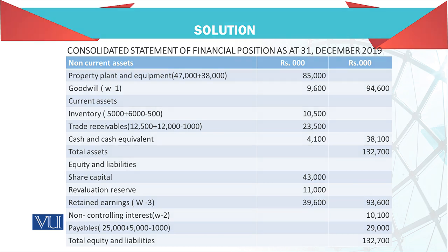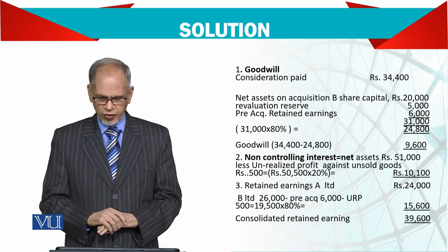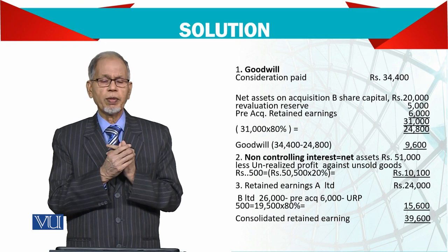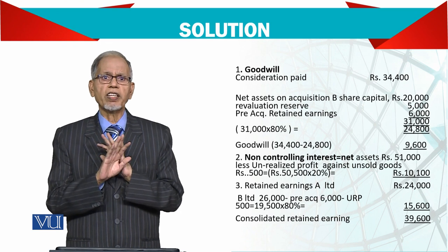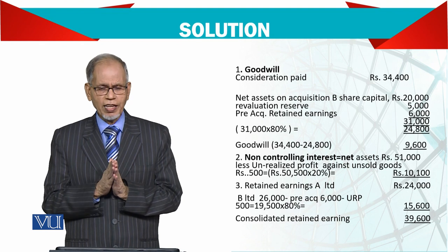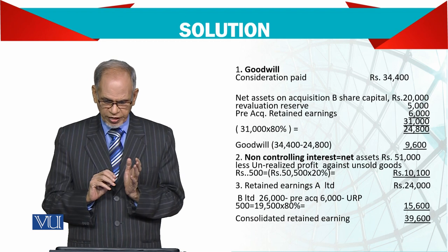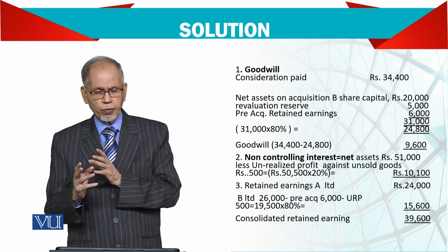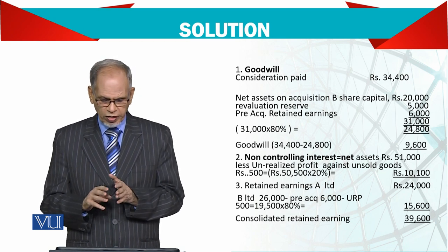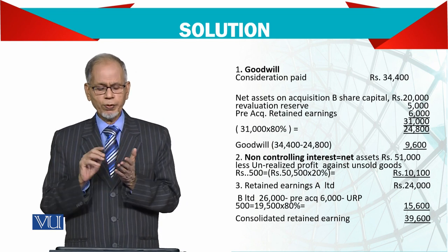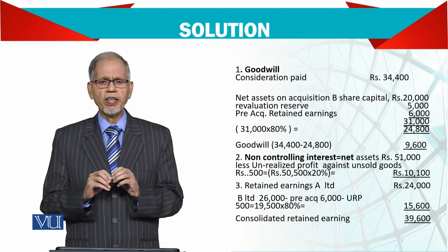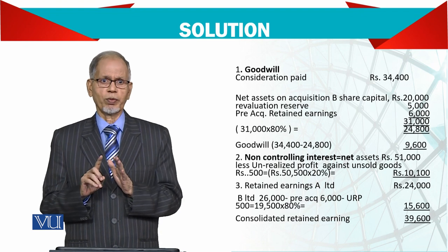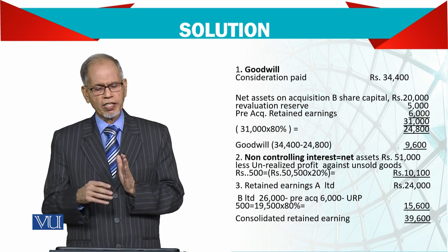For the NCI working: the net assets are 51,000, comprising share capital, reserves and profit. Note that for NCI there is no pre/post distinction — you take existing balances and show the NCI's share, adjusting for any adjustments required. After deducting the unrealized profit, the remaining balance is 50,500, and 20% of that gives the minority interest. So for NCI: simply take the equity figures in the balance sheet, apply any adjustments, and give them 20% of the remaining balance.